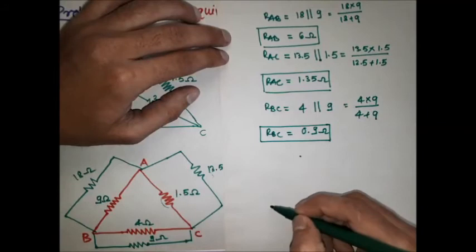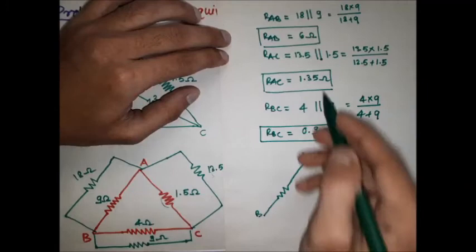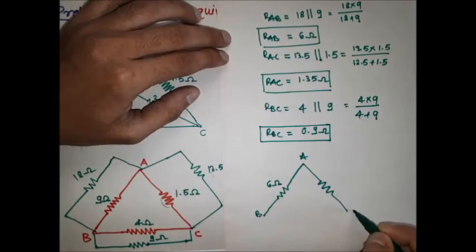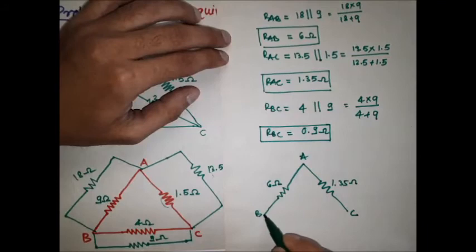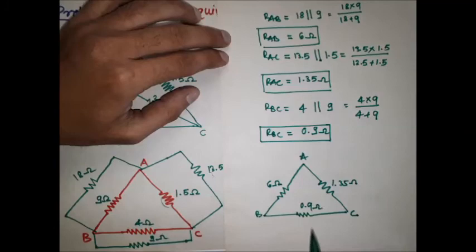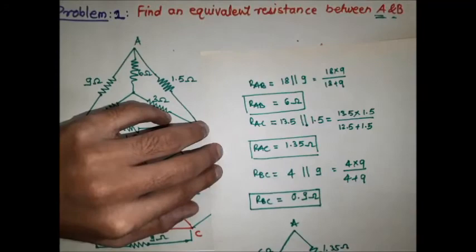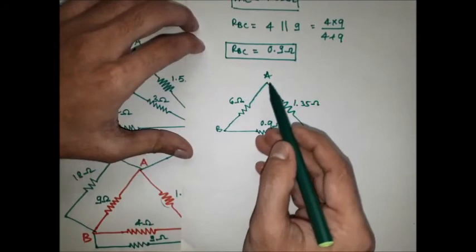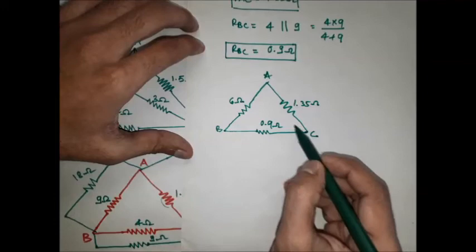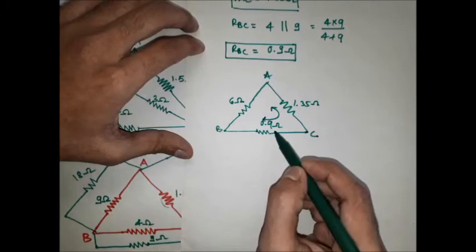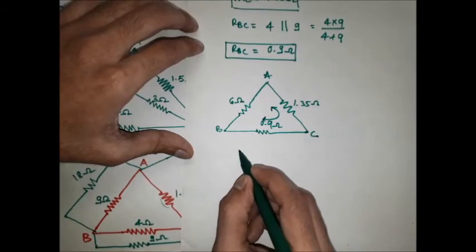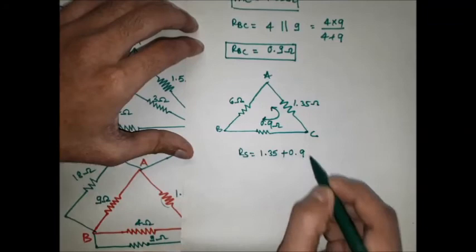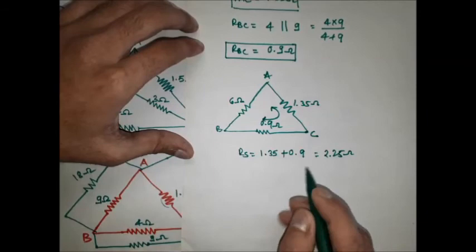Redrawing the circuit: between terminals A and B the resistance is 6 ohm; between A and C it is 1.35 ohm; between B and C it is 0.9 ohm. Since we need resistance between A and B, terminal C is not considered directly, so the 1.35 ohm and 0.9 ohm resistances are in series: R_series = 1.35 + 0.9 = 2.25 ohm.